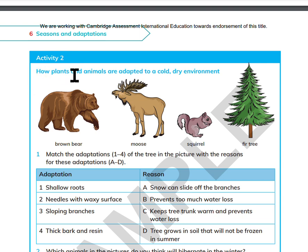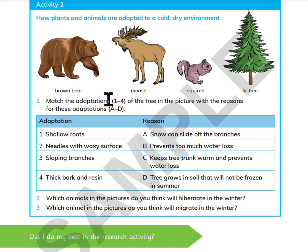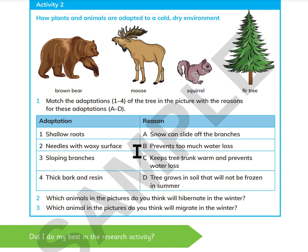Activity 2: How plants and animals are adapted to a cold, dry environment. Match the adaptations from 1 to 4 of the tree in the picture with the reason for these adaptations from A to D. The adaptations are: shallow roots, needles with black surface, sloping branches, and thick bark and resin. The reasons are: snow can slide off the branches; prevents too much water loss; keeps the tree trunk warm and prevents water loss; and roots grow in soil that will not be frozen in summer.